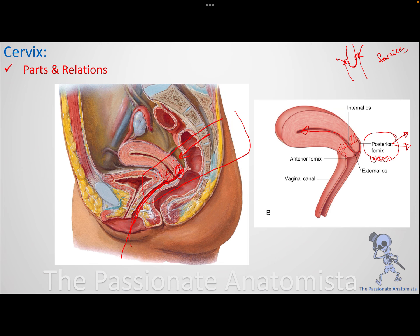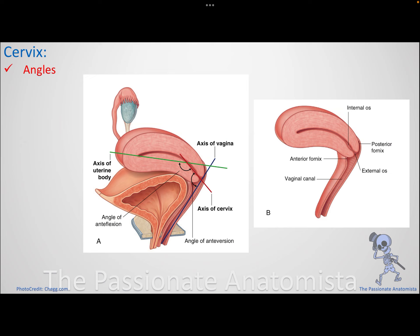There are two important angles made by the cervix with the organs before and after it. The organ before is the uterus; the organ after is the vagina. The angle with the vagina is called anteversion — that is 90 degrees. The long axis of the vagina and the long axis of the cervix give you 90 degrees, which is the normal anteversion angle.